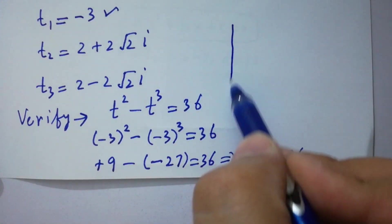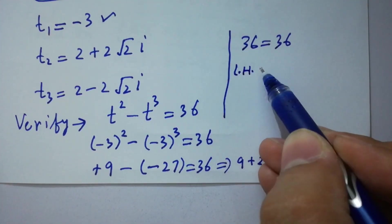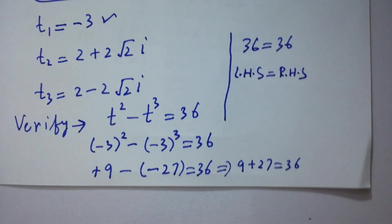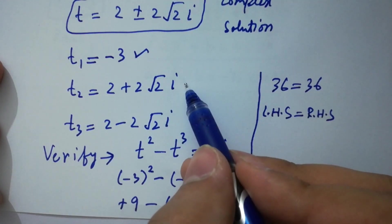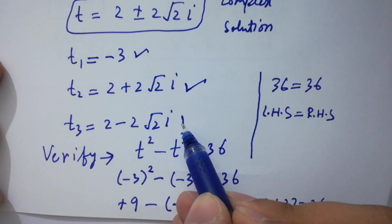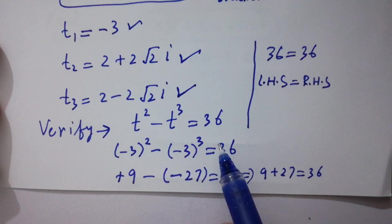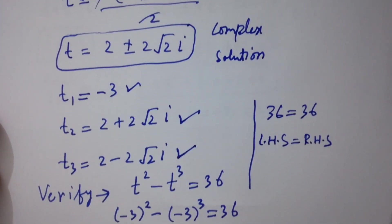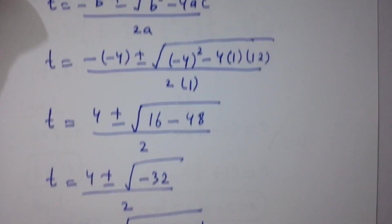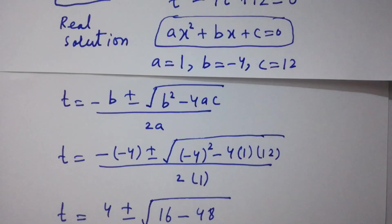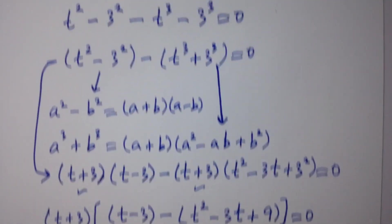9 plus 27 equals 36, equal to 36. You can see here left-hand side equals right-hand side, which shows that t1 equals minus 3, t2 equals 2 plus 2 square root of 2i, and t3 equals 2 minus 2 square root of 2i all satisfy the equation t-squared minus t-cubed equals 36. Subscribe to the channel to learn more. Okay, bye.